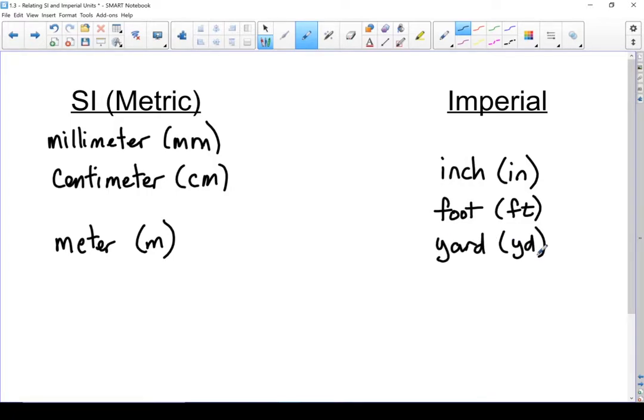Last we're going to go with the largest units that we tend to use. In metric it's the kilometer, short form km. And imperial it's mile, short form mi.